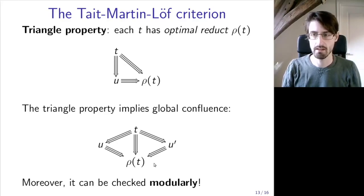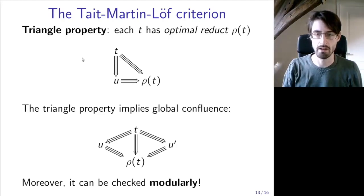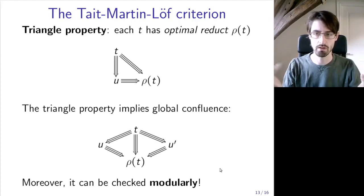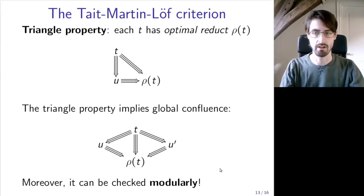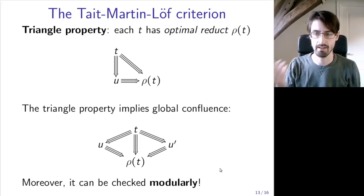We extended this to our setting of rewriting type theory. Now, the triangle property doesn't always hold, but it's something we can check for our rewrite rules. If it holds, we can use the same proof to prove global confluence of the reduction. One very nice property of this triangle criterion is that we can check it in a modular fashion. That means if we import two different modules that both define some rewrite rules, and both modules separately satisfy the triangle criterion, then we can import both together and conclude that the whole system also satisfies the triangle criterion — on the condition that there is no overlap between the symbols involved in the rewrite rules.